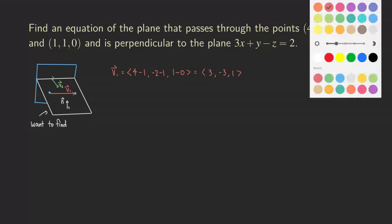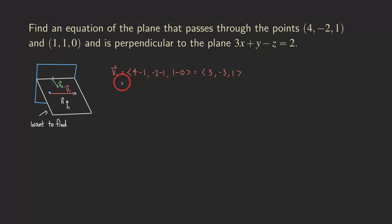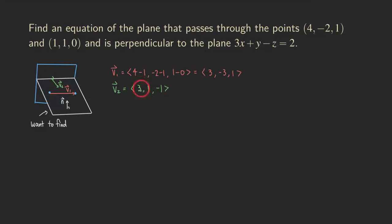Now we need the green vector V2, which is actually easy — we can just read it from the given plane equation. V2 is the normal vector of the given plane, found by reading the coefficients of x, y, and z. So the normal vector is (3, 1, −1), and that's V2.